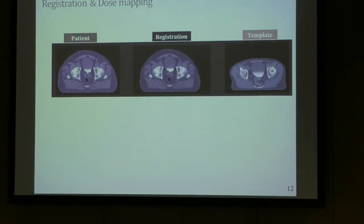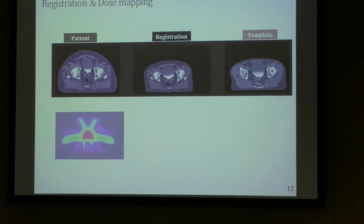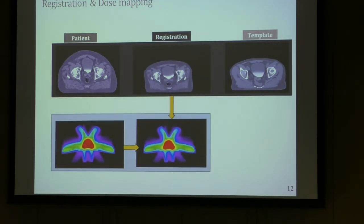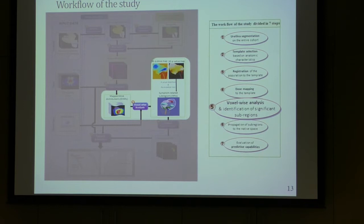More specifically, we have a patient, we register it to the template — deforming the image — produce a deformation field, and apply this deformation field on the dose distribution. After doing this for all patients, we have propagated all dose distributions to the common coordinate system, which is the space of the template, and we are able to perform a voxel-wise analysis — performing a statistical test at every single voxel of the image.